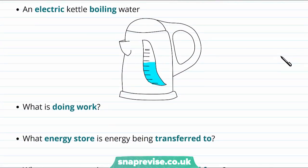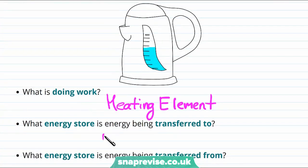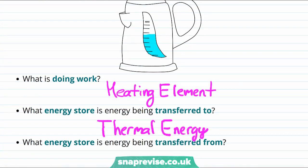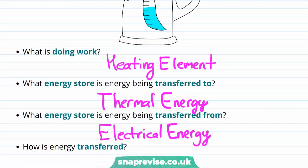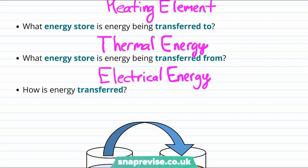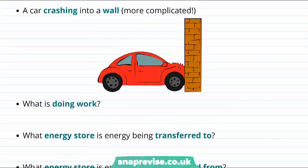Now let's look at the example of an electric kettle boiling water. The thing doing work here is the heating element of the kettle. The purpose of the electric kettle is to heat up the water, so the energy store the energy is being transferred to is the thermal energy of the water. We have to plug in a kettle to make it work, so we know the energy is electrical energy — it's being transferred from the electrical energy store. And finally, we can see that the energy has been transferred electrically. Overall, the transfer has been from the electrical energy store to the thermal energy store.